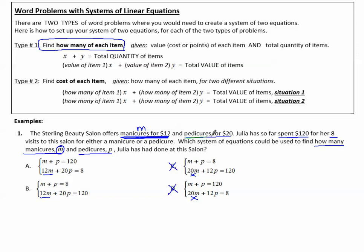Then it says pedicures are $20. So the value of the second item times the variable given, since pedicures is given as P, P here for pedicures, so that's 20P. Notice there's a 20P here and a 20P here.